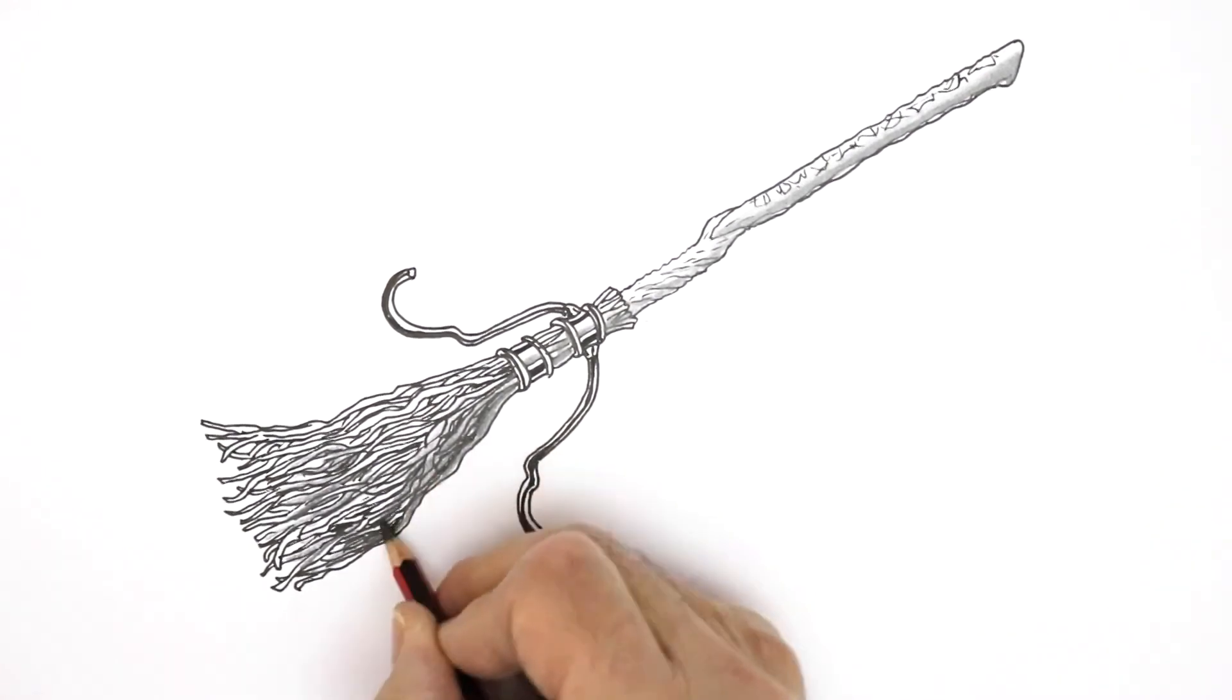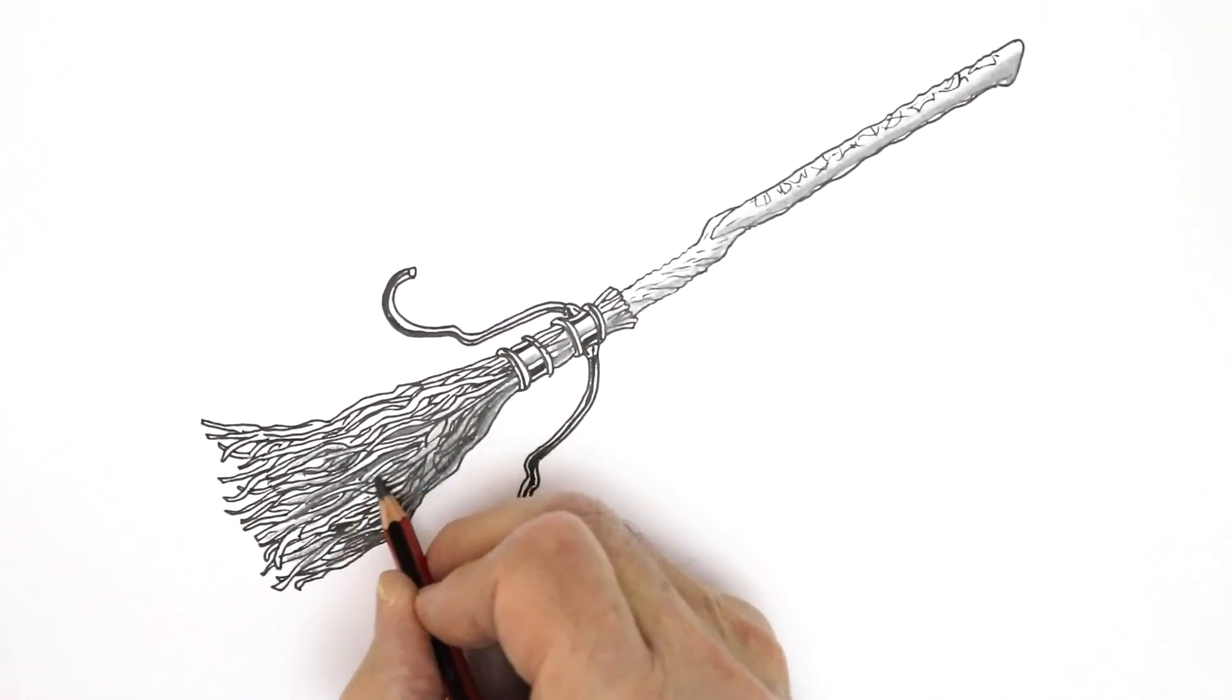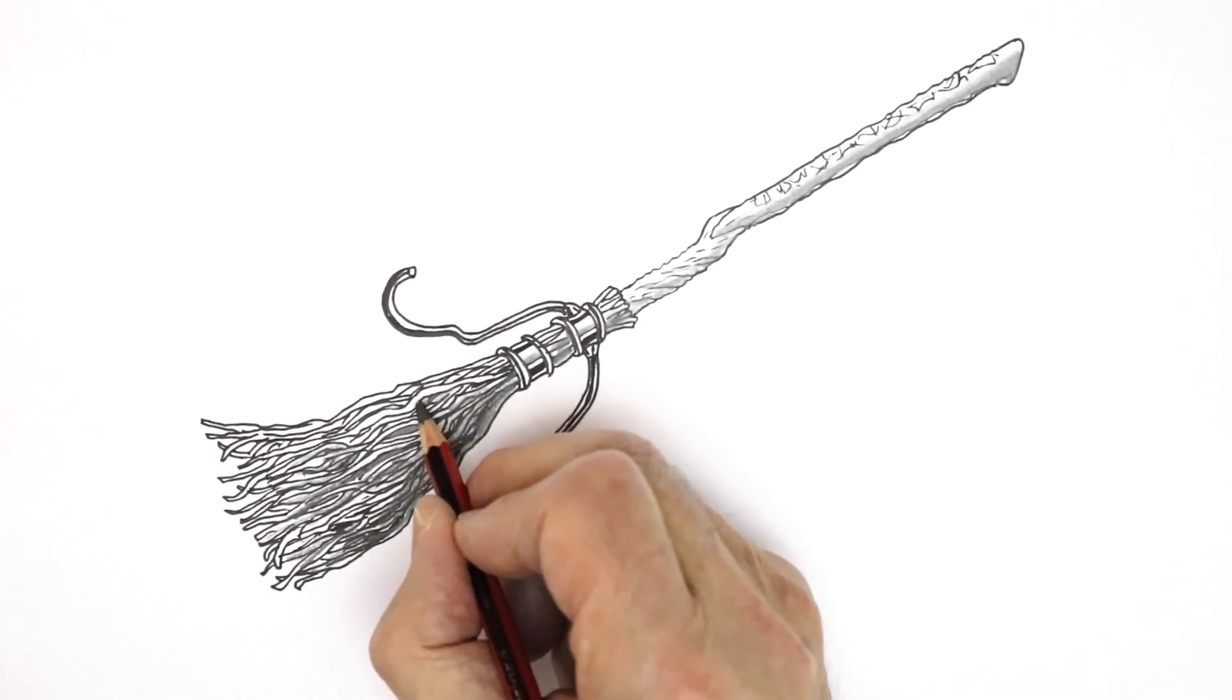The main of this side here is going to be dark, and the top is light. And I can shade in some of the gaps as well, in between the twigs.